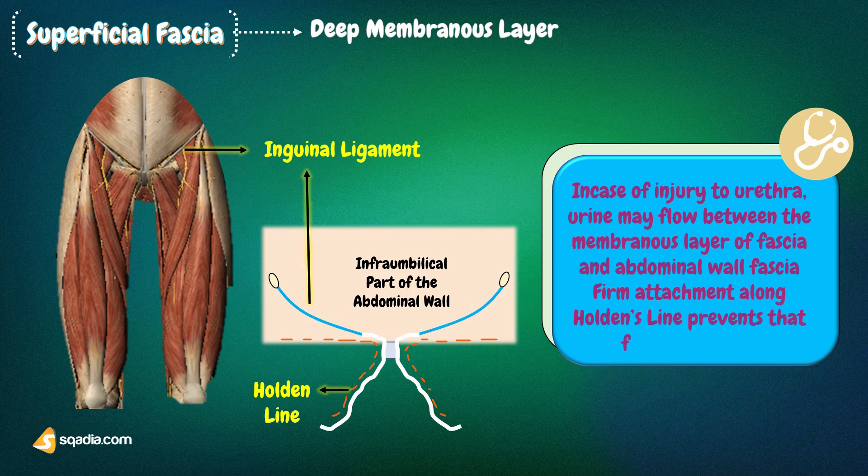Hence, urine can pass up into the anterior abdominal wall, from where it can enter the upper part of the thigh. However, the firm attachment of the membranous layer of superficial fascia to the deep fascia along Holden's line prevents urine from descending into the thigh beyond the line.